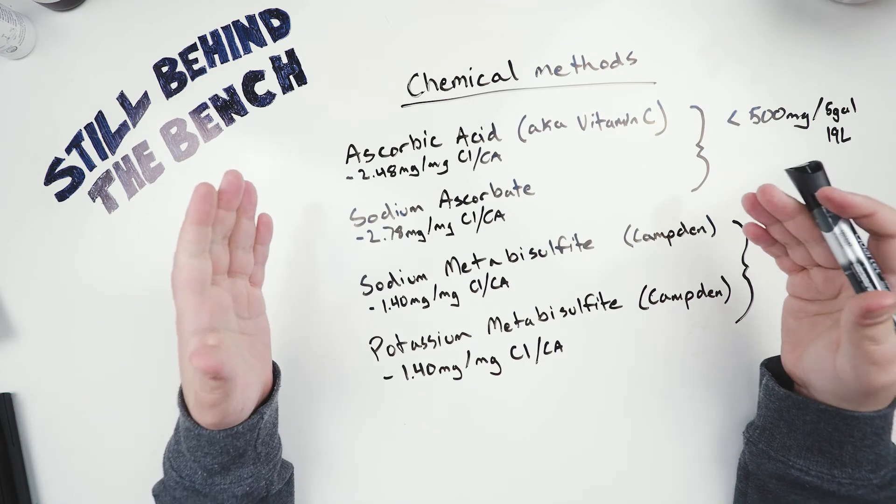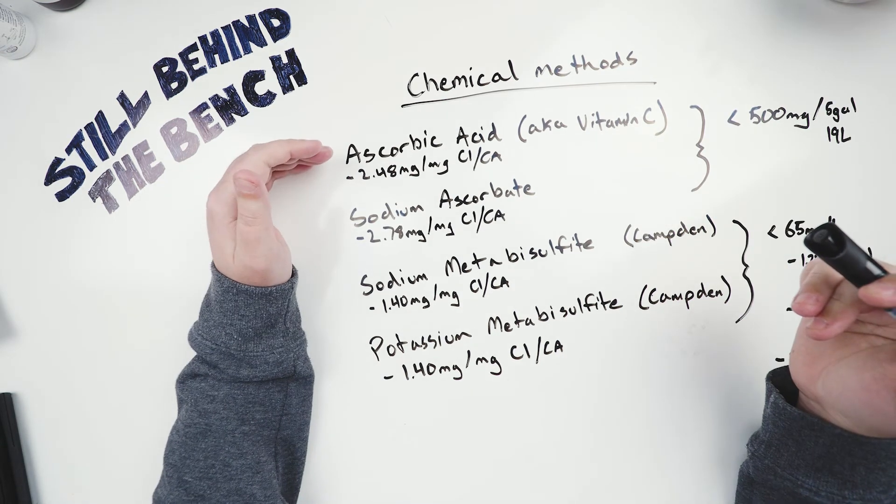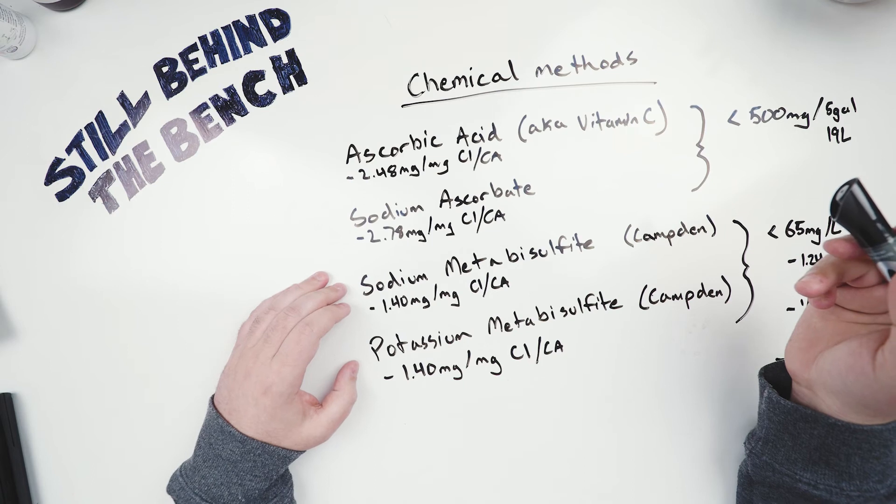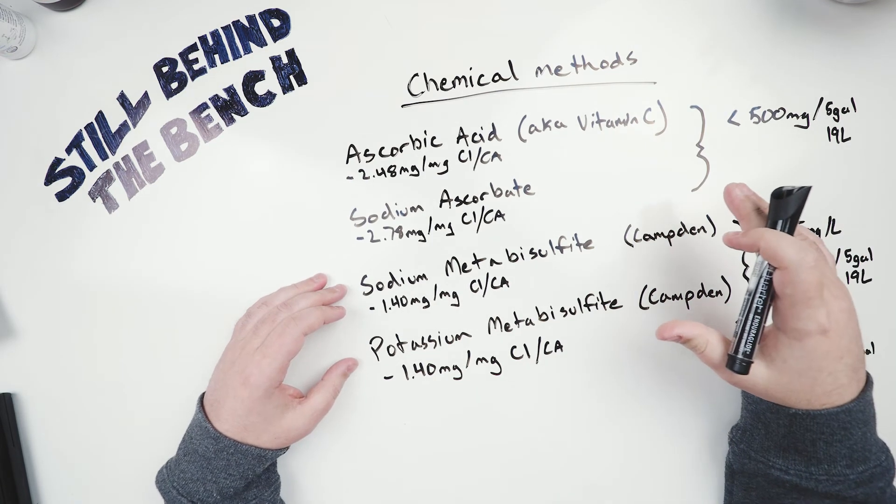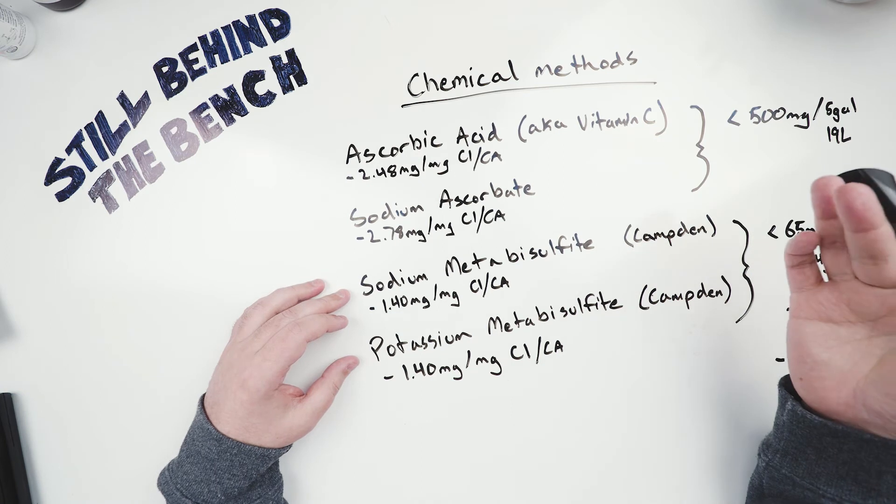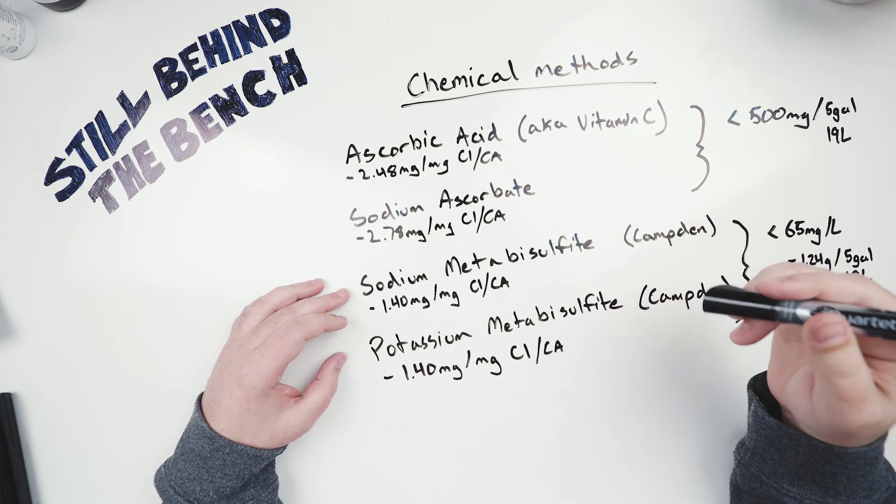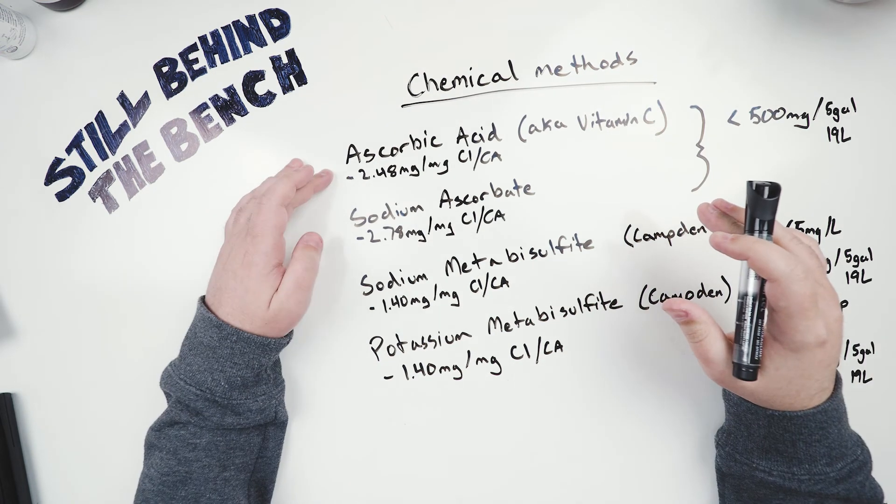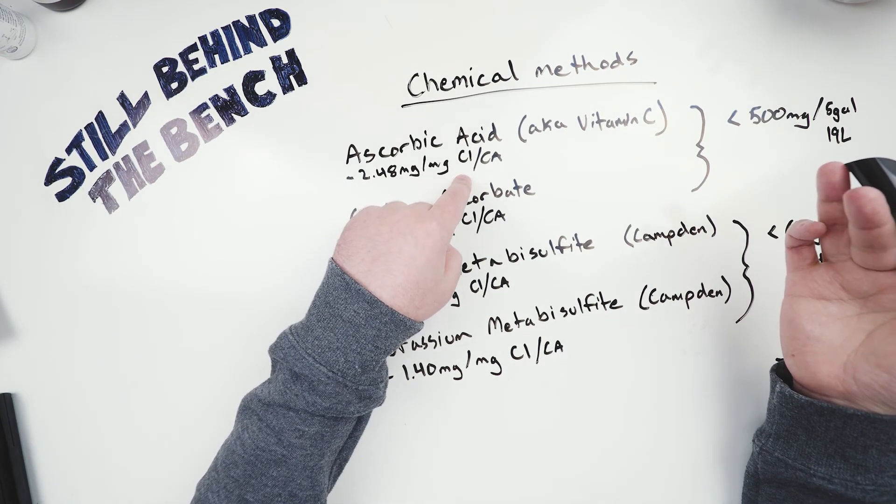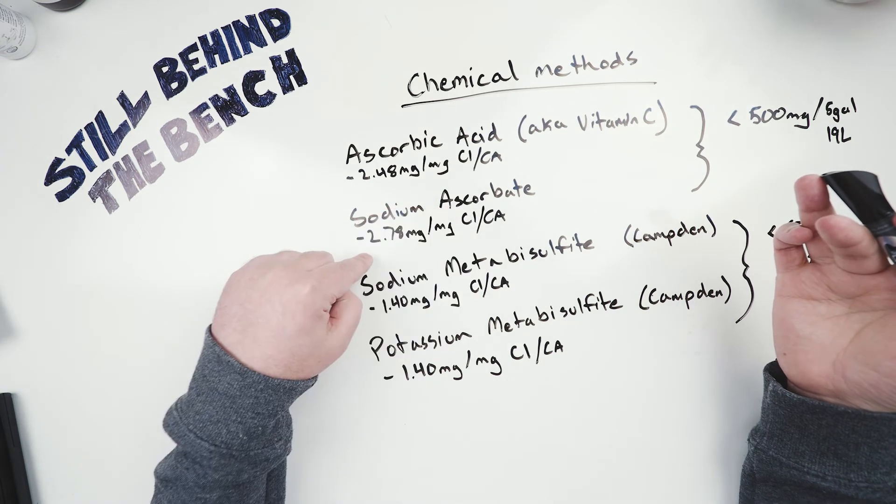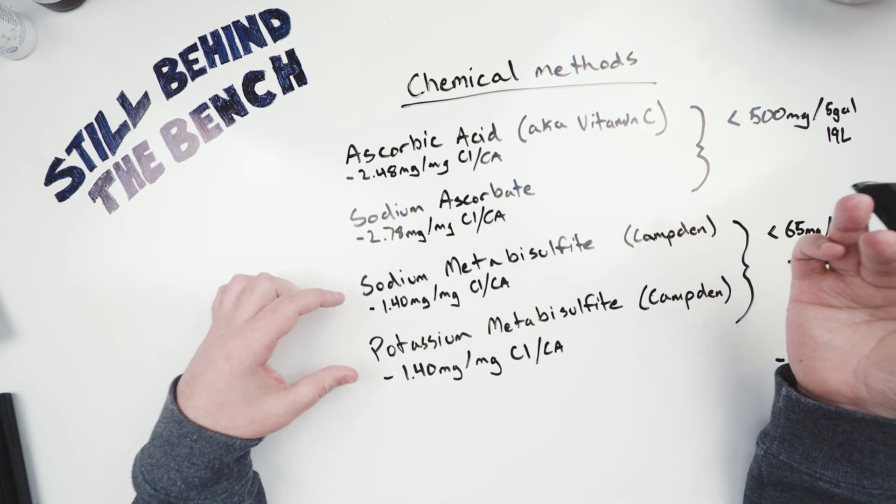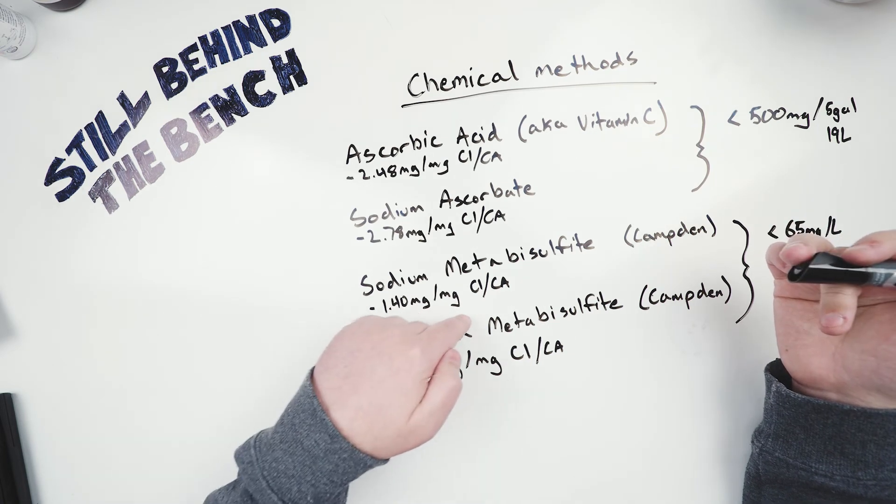In terms of recommendations of which one to go with, I'd say if you don't have any of these yet already, I would start with the ascorbic acid or the sodium ascorbate just because you can't really overdo it with these two. If you put in too much of the metabisulfites, especially during fermentation, you'll end up killing all your yeast. And if you put in too much during distillation, you'll have a bunch of extra sulfites which could lead to the creation of sulfur-based compounds like the dimethyltrisulfite that I talked about in the last video. So for the ascorbic acid, you only need to put in 2.48, essentially 2.5 milligrams for every milligram of chlorine or chloramine that's present in the water. For the sodium ascorbate, it's 2.78, so 2.8 milligrams per milligram of chlorine or chloramine. And then for both the metabisulfites, it's only 1.4 milligram per milligram of chlorine or chloramine.